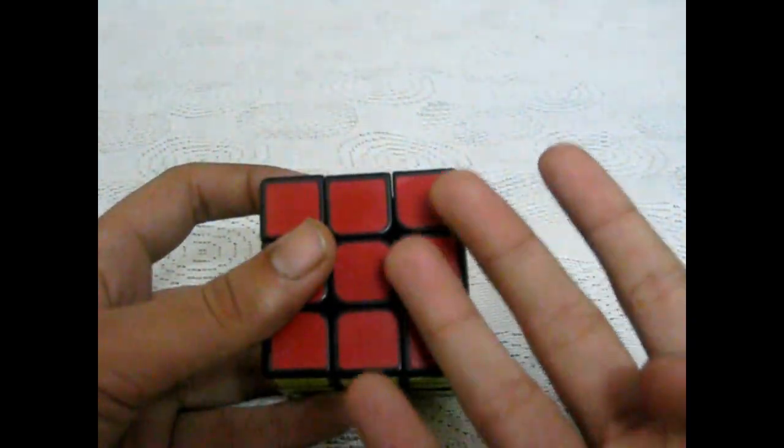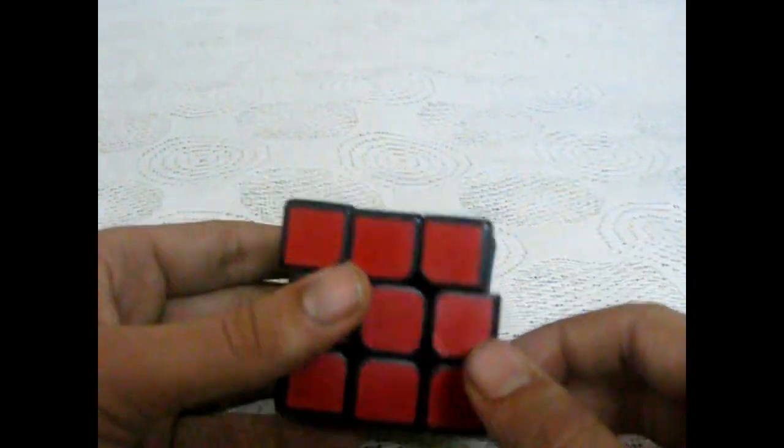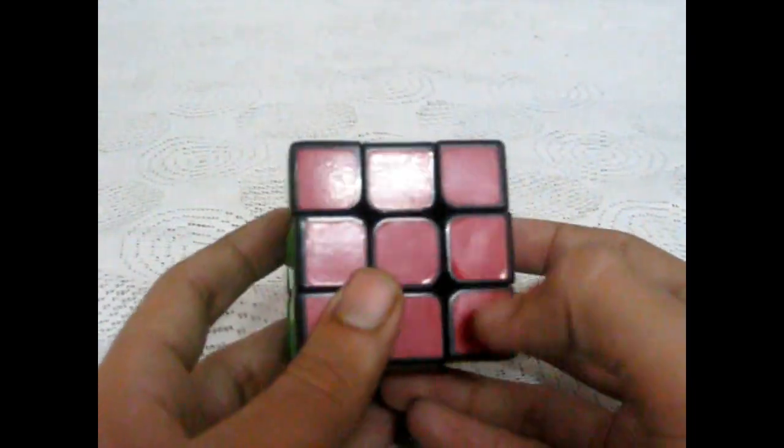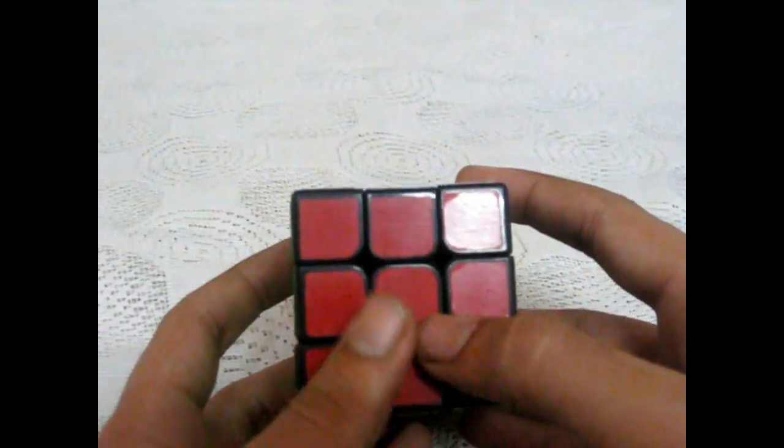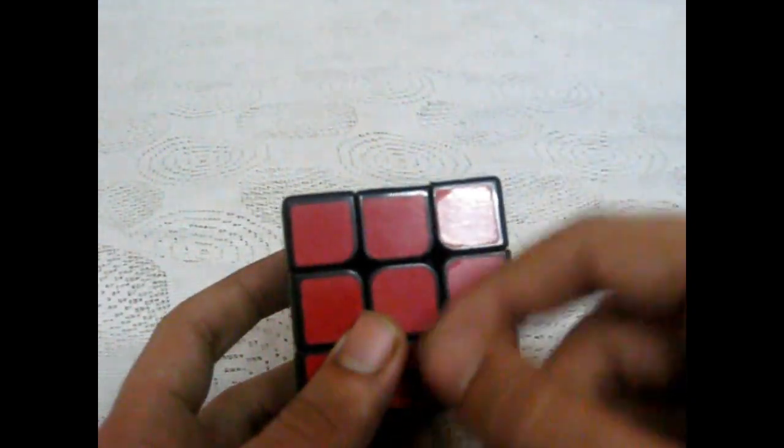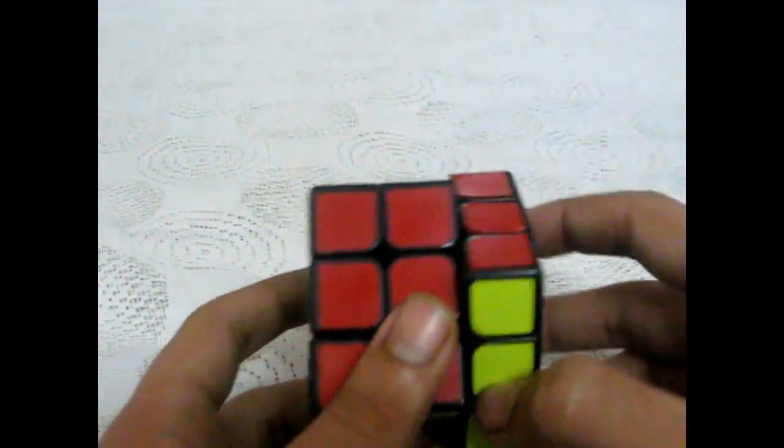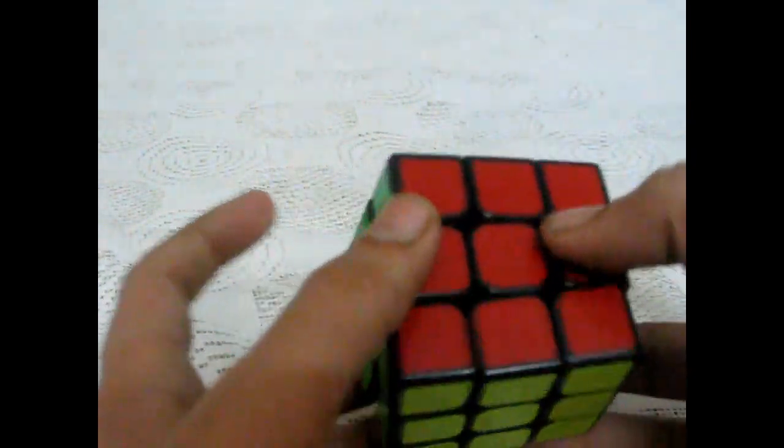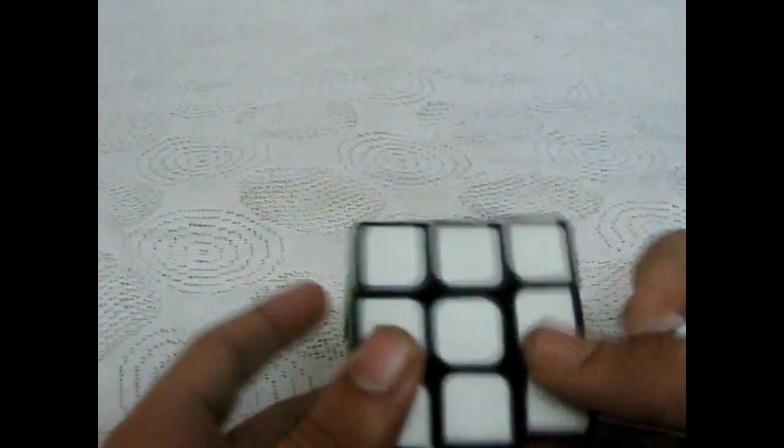There are four types of movements of layers. The first one is when you have to move a layer once clockwise, that is just once clockwise. The names of the layers are R for this layer, L for this layer, U for this layer, D for this layer, F for this layer and B for the back one.